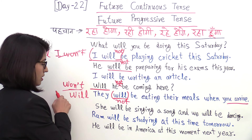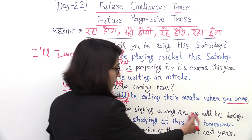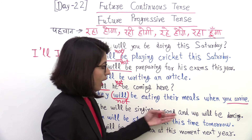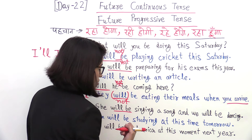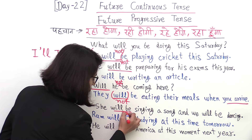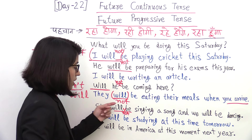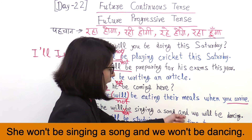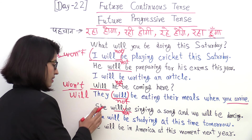Will they be eating their meals when you arrive? Will they not be eating their meals when you arrive? When you make interrogative negative, 'not' comes after the subject. In contraction form, 'not' joins with 'will'. Also: She will be singing a song and we will be dancing — these two actions are parallel. For the negative: She will not be singing a song, or she won't be singing a song, and we will not be dancing, or we won't be dancing.